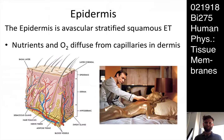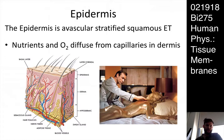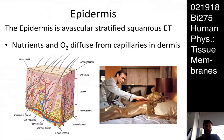The epidermis is avascular, stratified squamous epithelium. The cells of the epidermis get their nutrients and oxygen via diffusion from capillaries that are in the dermis below. We've said that epithelial cells are avascular — no blood vessels get up into an epithelial layer. So all of the metabolic requirements of your epidermis, those epithelial cells, come from the dermis below.